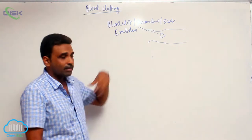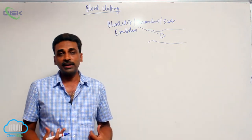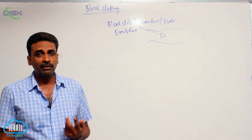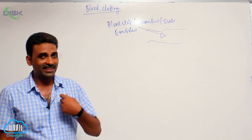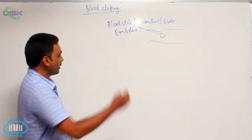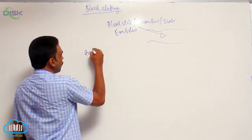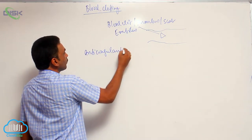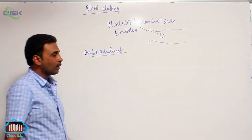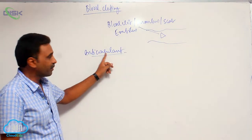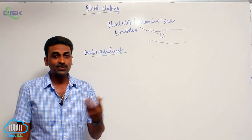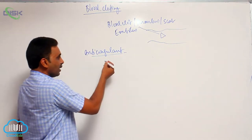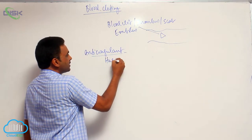As long as blood is flowing inside the blood vessels, there is no blood clotting. That is because we have anticoagulants being released. Anticoagulant means substances which prevent blood clotting, like hemolysin. Coagulation means clotting, so anticoagulant means substances which prevent blood clotting.